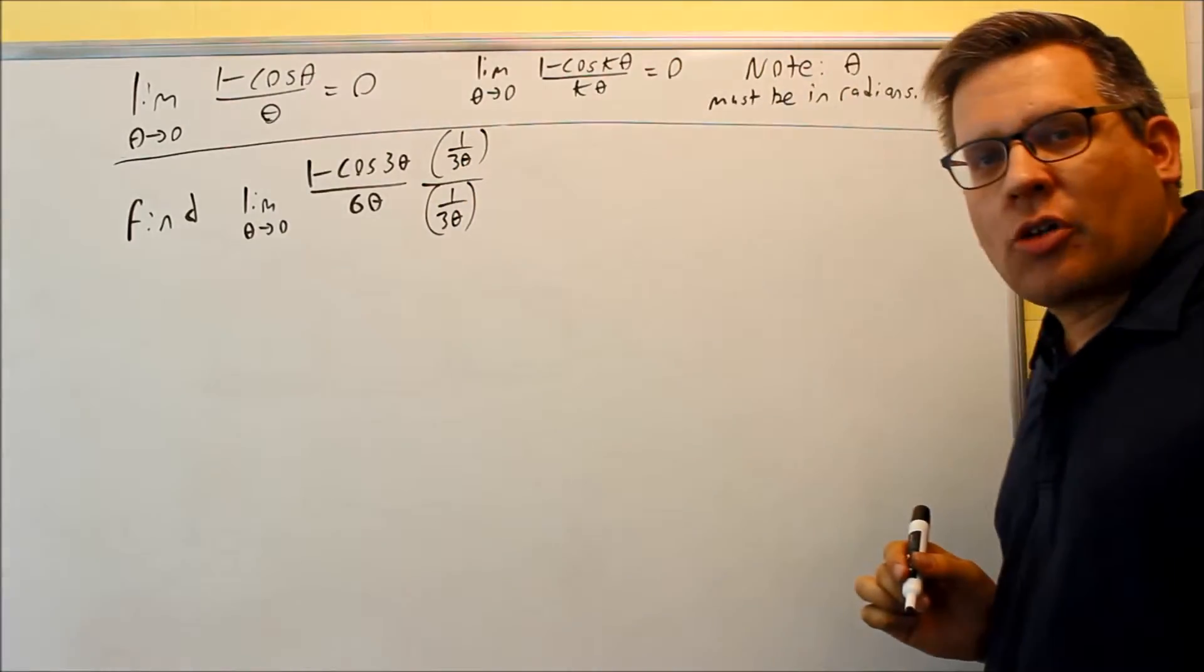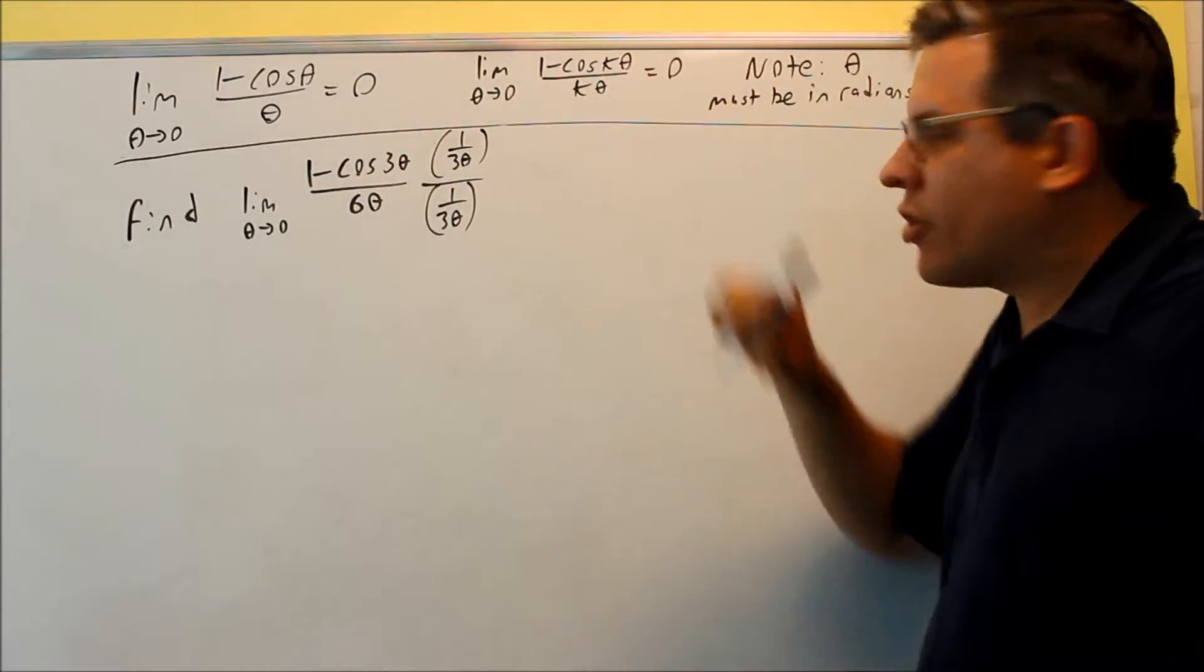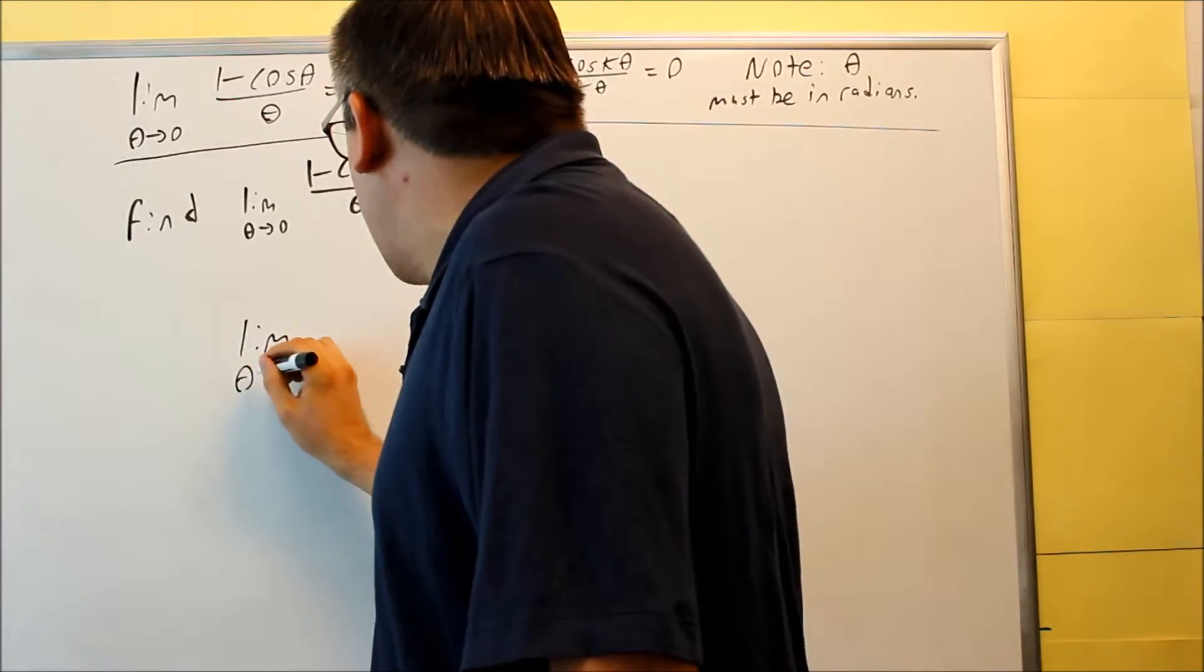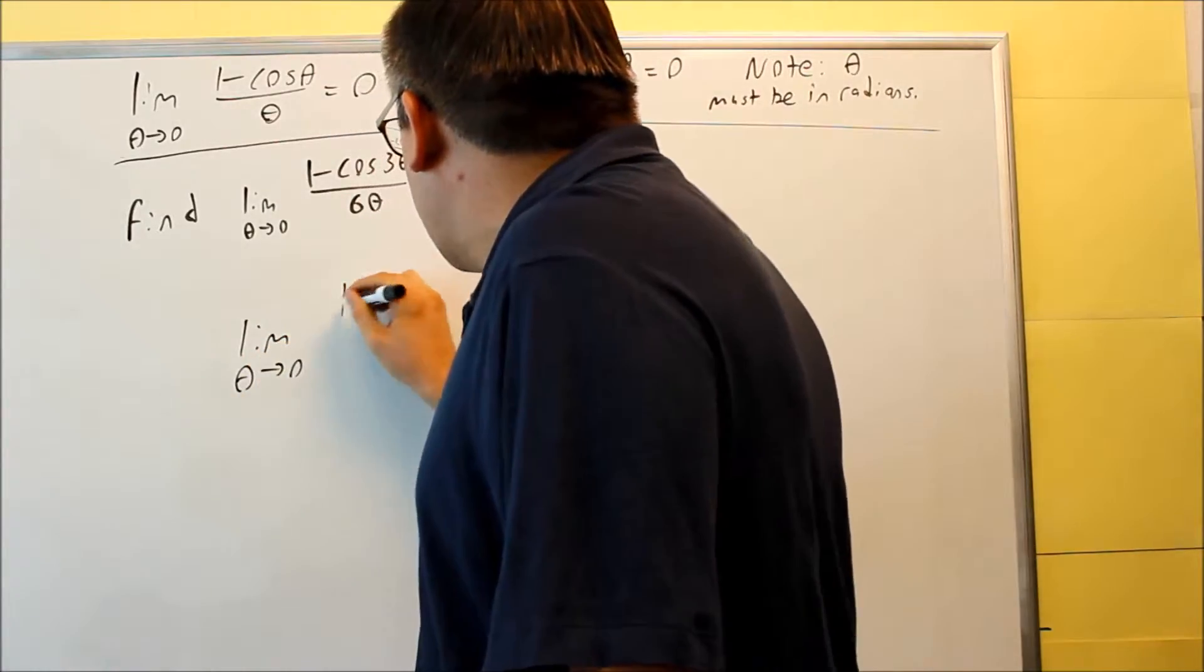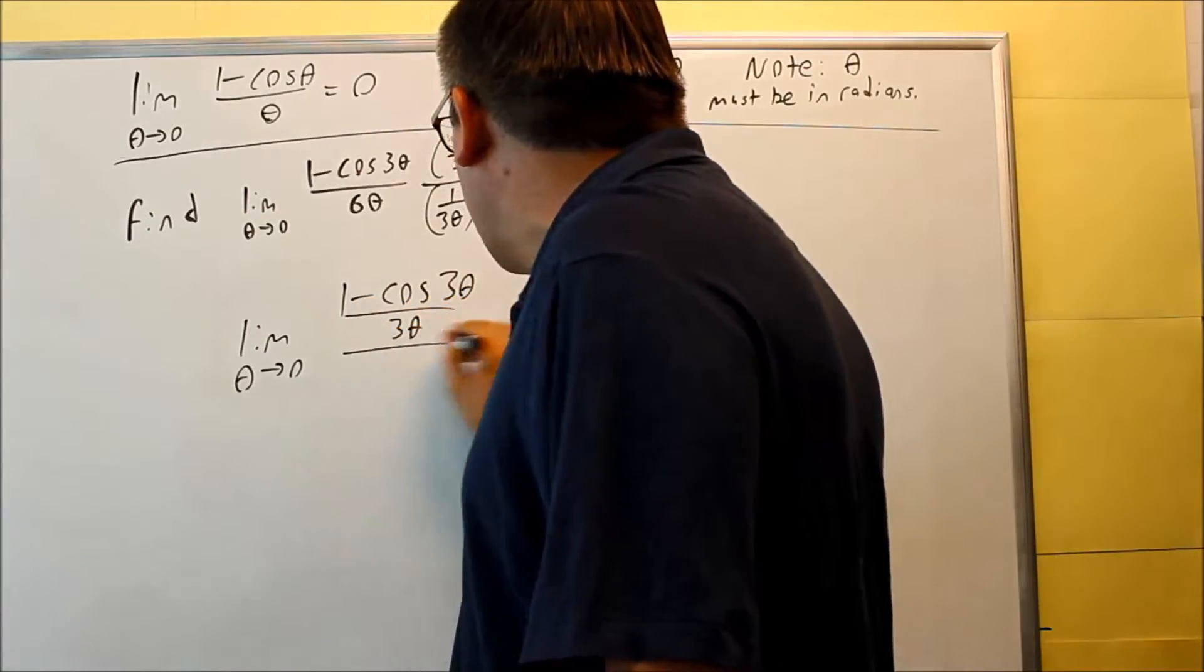By doing that, that's automatically going to get the correct thing. The k values are going to match each other and we'll be able to apply that limit. So, multiplying top and bottom by that. On top, you're going to have one minus cosine three theta over three theta on the bottom.